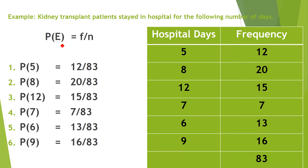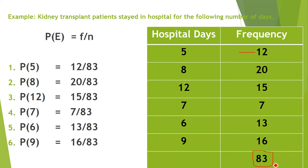Here is a simple example: kidney transplant patients stayed in the hospital for the following number of days. There were 12 patients who stayed 5 days, 20 patients who stayed 8 days, and 16 patients who stayed 9 days. Total patients were 83. The probability that a patient stayed 5 days is 12 divided by 83, and the probability of 8 days is 20 divided by 83.